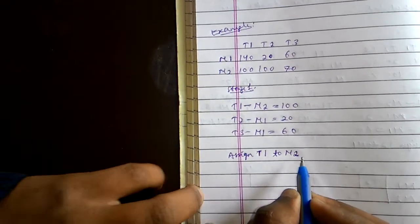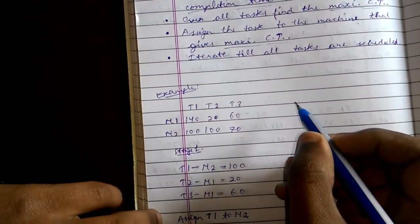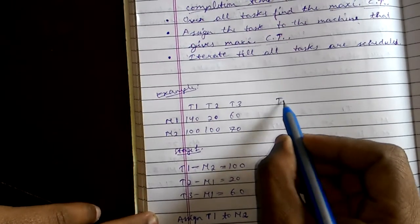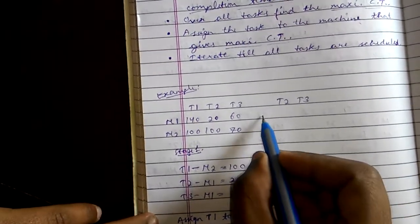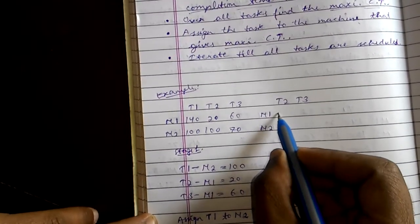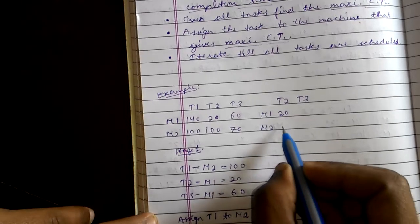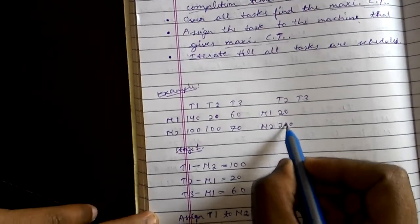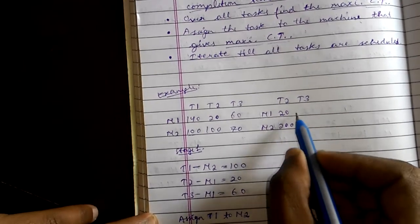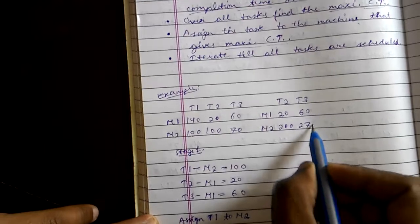Now since this has been assigned, the remaining tasks are t2 and t3 with machines m1 and m2. It becomes 20, 100 that is 100, 200, since this 100 will be added, 60 to t2.